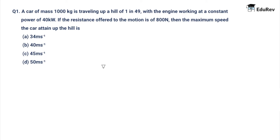A car of mass 1000 kg is traveling up a hill of 1 in 49, with the engine working at a constant power of 40,000 watts. If the resistance offered to the motion is 800 newtons, then what is the maximum speed the car attains up the hill?